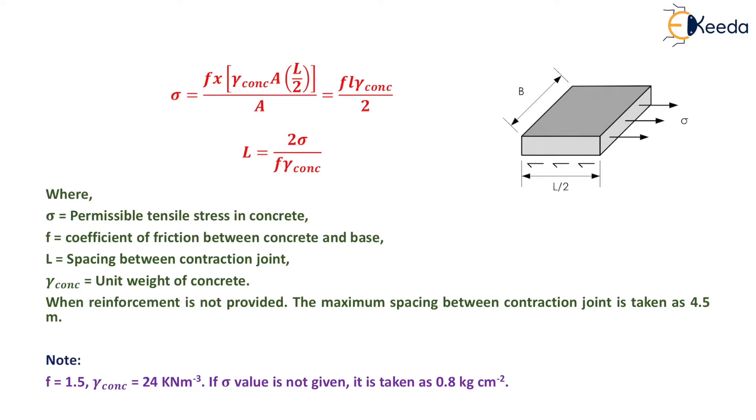Where σ is the permissible tensile stress in concrete, f is the coefficient of friction between concrete and base, L is the spacing between contraction joints, and γconcrete is the unit weight of concrete. When reinforcement is not provided, the maximum spacing between contraction joints is taken as 4.5 m. Note: f = 1.5, γconcrete = 24 kN/m³. If σ value is not given, it is taken as 0.8 kg/cm².